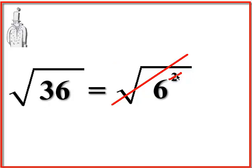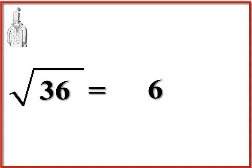cancels out the exponent of 2. They are inverses of each other. So now that allows us to basically erase the radical sign and the exponent, and that leaves us with 6.